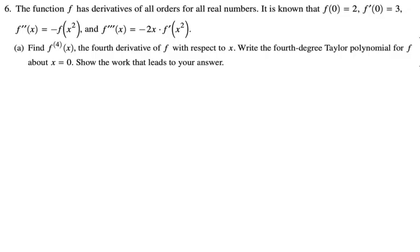Part A: We got to find the fourth derivative, then write the fourth degree Taylor polynomial for f at x equals zero, and we want to show the work. So step one is we got to find the fourth derivative, but luckily we already know the third derivative.